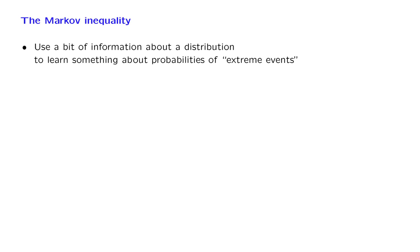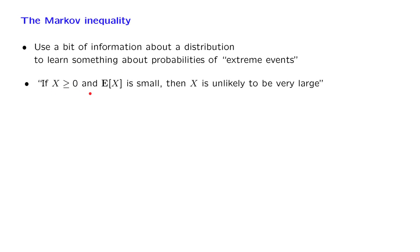The basic idea behind the Markov Inequality, as well as many other inequalities and bounds in probability theory, is the following. We may be interested in saying something about the probability of an extreme event — that some random variable takes a very large value. If we can calculate that probability exactly, then of course everything is fine. But suppose that we only have a little bit of information about the probability distribution at hand. For example, suppose that we only know the expected value associated with that distribution. Can we say something? Here is a statement which is quite intuitive: if you have a non-negative random variable and the average or expected value is rather small, then there should be only a very small probability that the random variable takes a very large value. This is an intuitively plausible statement, and the Markov Inequality makes that statement precise.